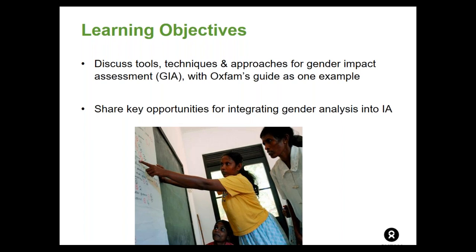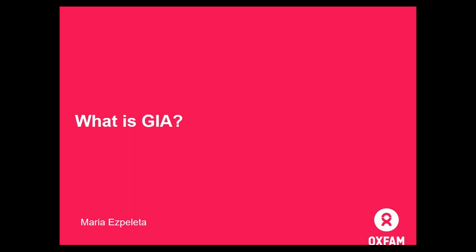Now let's get started. Maria, maybe you could begin by telling us what gender impact assessment is from Oxfam's perspective. Before diving into what GIA is, it's helpful to give a little framing on how Oxfam enters the space of impact assessments. In the case of extractive industries — oil, gas, and mining — we've been working with impacted host communities for around 20 years. In that time, we've seen that the impacts of projects are not gender neutral. Impacts are different for women, men, girls, and boys, and gender diverse groups in local communities, and projects often have significant effects on gender roles and relationships as well.